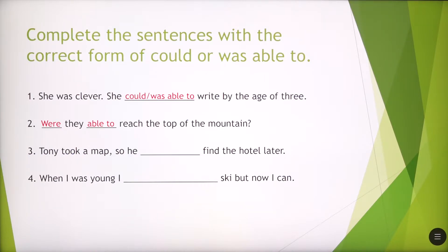Number three, Tony took a map so he, is it could or was able to? Tony took a map so he could find the hotel later or he was able to find the hotel later. So both of these expressions are correct in this case.